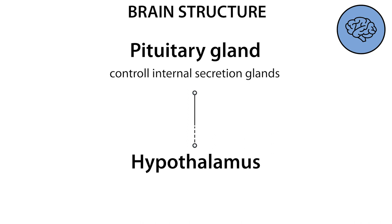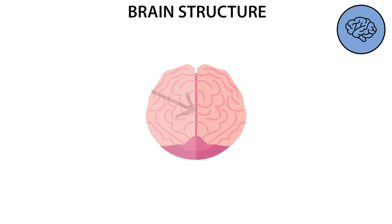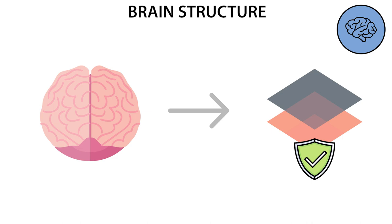The cerebrum is divided into two hemispheres connected by the corpus callosum. The gray matter forms the cerebral cortex, which covers the large hemispheres in a thin layer.